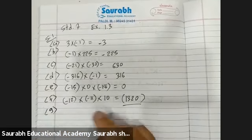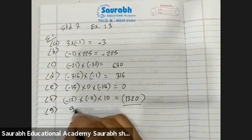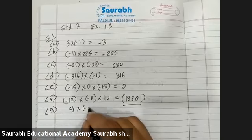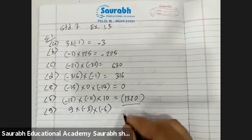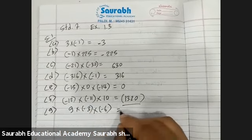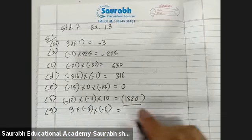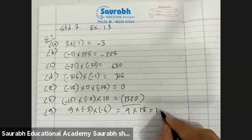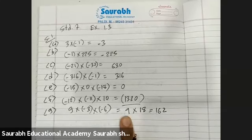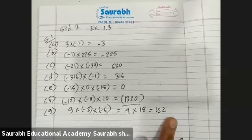G: 9 into minus 3 into minus 6. First, 3 into 6 — 3s are 18. Then 18 into 9 — 9s are 162. The answer is 162.